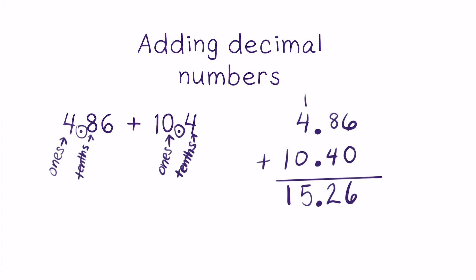Once the decimal point has been brought down to the sum, we can clearly see the place value of the digits in the answer, which is fifteen and twenty-six hundredths. So four and eighty-six hundredths plus ten and four tenths equals fifteen and twenty-six hundredths.